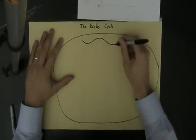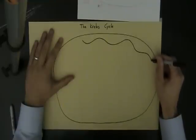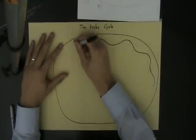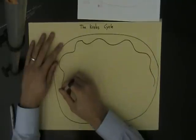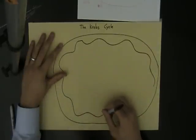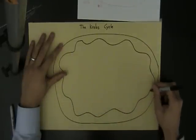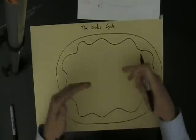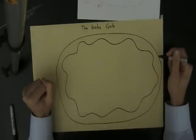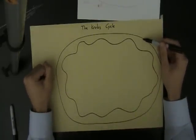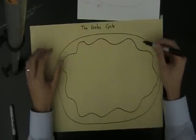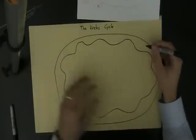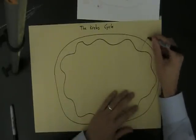Remember the mitochondria has got a folded inner membrane. I'm not really exaggerating these folds — they're much more exaggerated than this in reality, but I need lots of room in the middle. Normally these folds would be much bigger, really increasing the surface area. This is the outer membrane, this is the inner membrane, and we have this inter-membrane space here. These folds are called cristae.